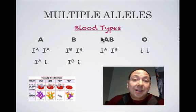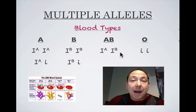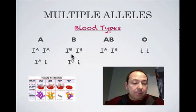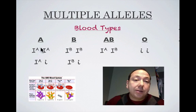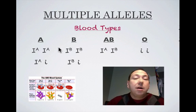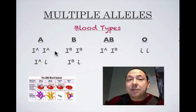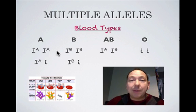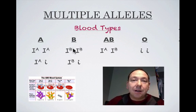With this key we've made here, you're going to want to commit this to memory. Because nine times out of ten when you're asked about a multiple allele problem, it's going to be on blood types. So the more you practice writing this key, the better off you're going to be.